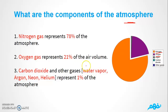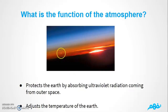You can also notice that there are other gases that exist here. For example, carbon dioxide and other gases like water vapor, argon, neon, and helium represent 1% of the atmosphere. We should also know the function of the atmosphere: first of all, the atmosphere protects the Earth by absorbing the ultraviolet radiation coming from outer space.